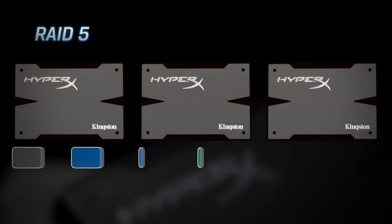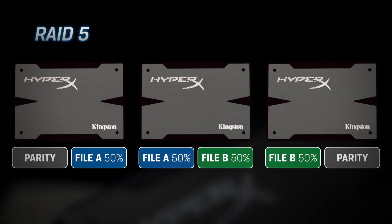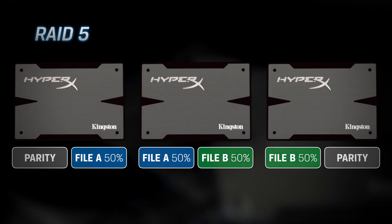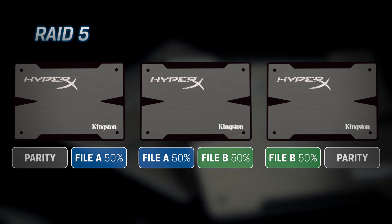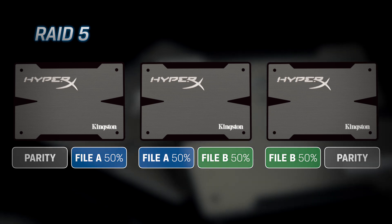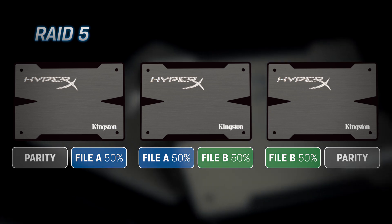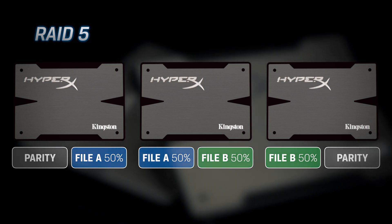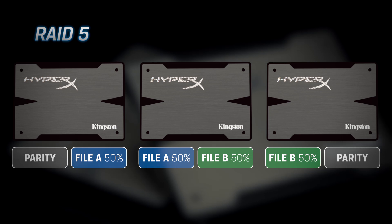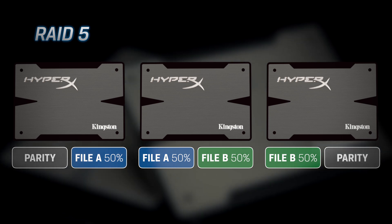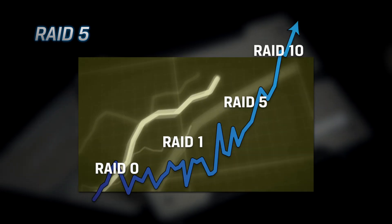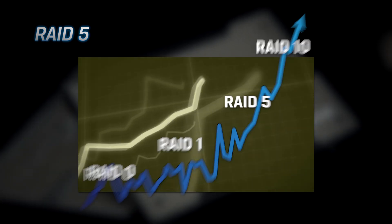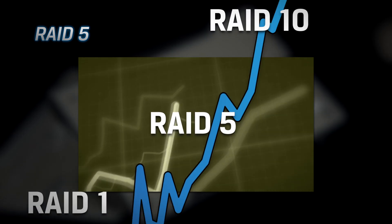RAID 5 is striping with distributed parity. The advantage of RAID 5 is it's cost effective to implement because you only lose the capacity of a single drive, regardless of the number of drives in the RAID group, and you have redundancy in the event of a drive failure.